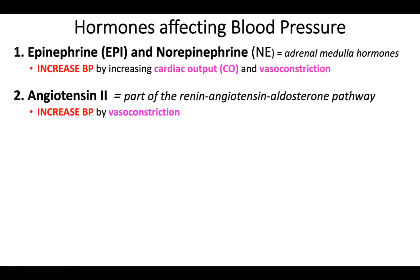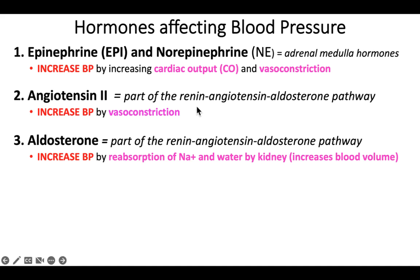The next hormone is angiotensin 2, part of a larger pathway called the renin-angiotensin-aldosterone pathway. Angiotensin 2 increases blood pressure by vasoconstriction. A third hormone, also part of that RAA pathway, is aldosterone. Aldosterone can increase blood pressure by reabsorption of sodium — meaning retention of sodium at the kidney. Because you retain sodium, you also retain water, and retaining water increases blood volume, which increases blood pressure.